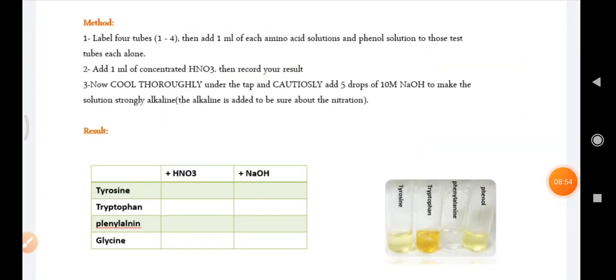So, what will be the procedure? We should take 4 test tubes and label 4 test tubes for tyrosine, tryptophan, phenylalanine and phenol. And add 1 ml of each amino acid solutions or protein solutions and phenol solution to those test tubes each. Then, add 1 ml of concentrated HNO3 and then record your result.